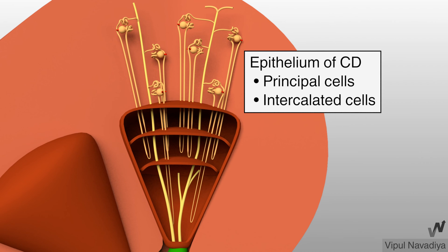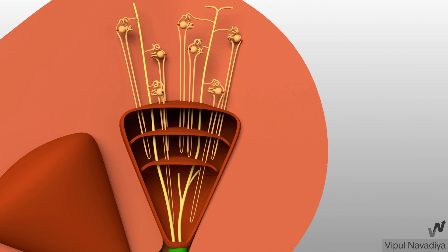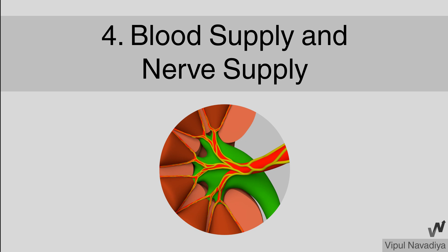The epithelium of the collecting duct is made up of two types of cells: principal cells and intercalated cells. The predominant type is principal cells. That concludes the renal tubule, which completes the structure of the nephron. In the next video we will see blood supply and nerve supply of the kidney. Thank you.